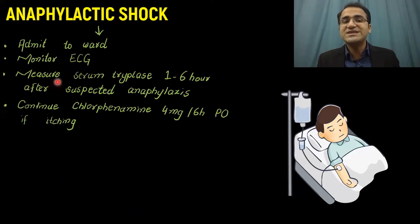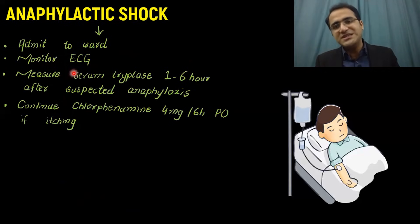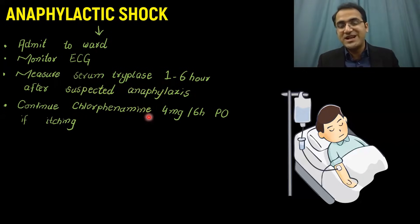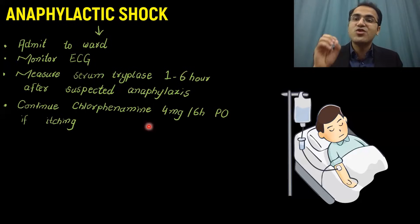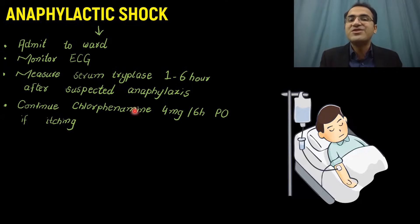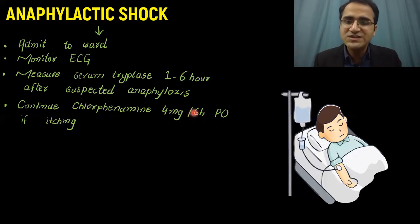If the patient gets better, shift them back to the ward and monitor ECG. ECG monitoring is important so that these patients do not develop cardiac complications. Measure serum tryptase level 1 to 6 hours after suspected anaphylaxis, since serum tryptase is released from mast cells, which are involved in type 1 hypersensitivity reaction — this can confirm the anaphylactic reaction. Give chlorpheniramine 4 mg orally every 6 hours if the patient experiences itching.